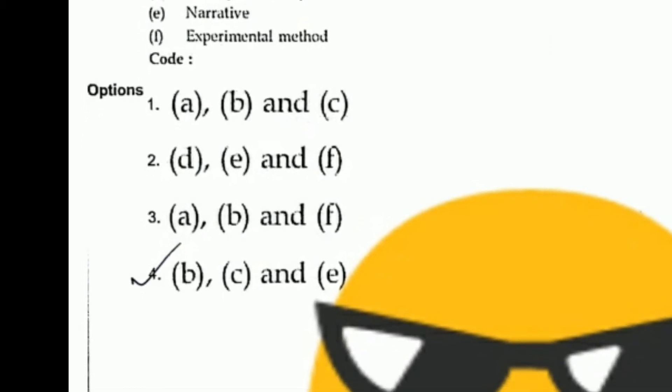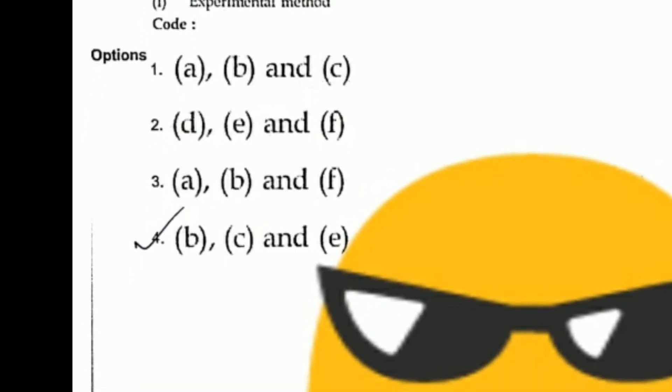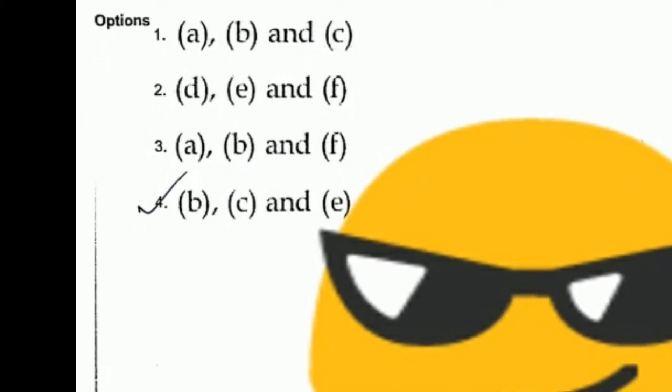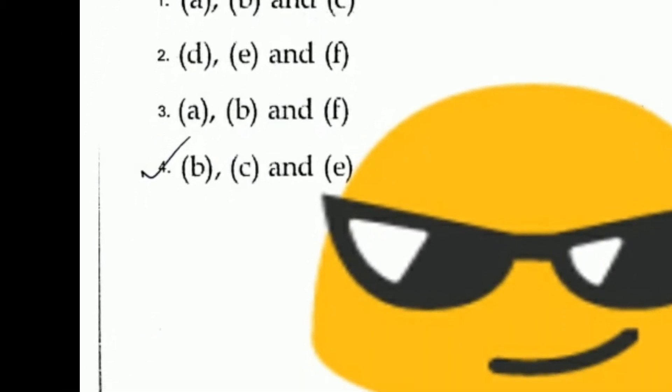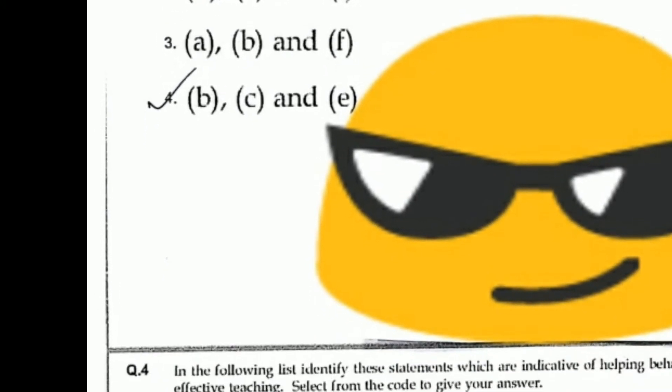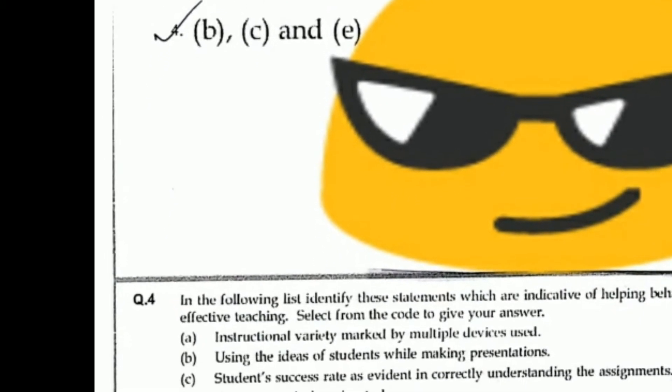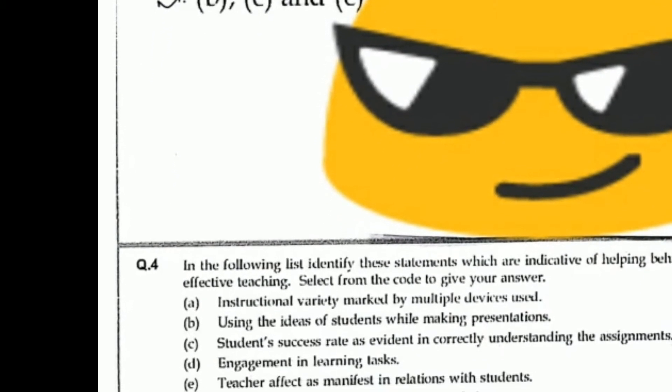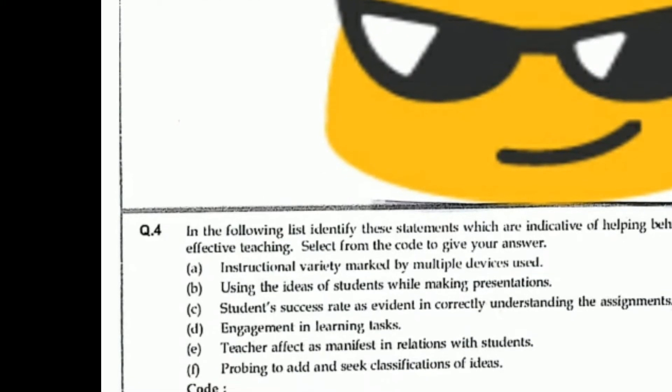For question three, few key learners — option B, C and E is the correct answer. Question number four is a list of advice statements.